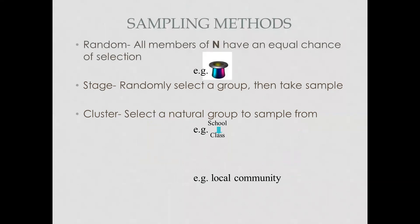The first type is random sampling. Random selection means you may select people based on certain features. For example, if you're looking for female students, you'll select only females from 100 students and may end up with 30, 40, or 50 people. You have one particular feature you want to work upon, and then you go for selection.